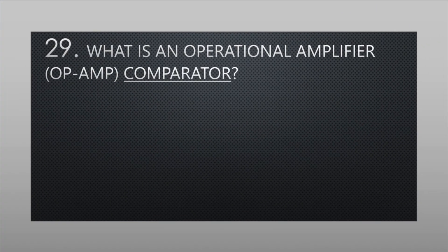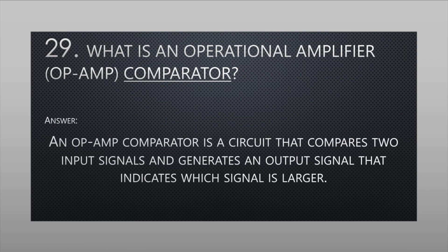What is an op-amp comparator? An op-amp comparator is a circuit that compares two input signals and generates an output signal that indicates which signal is larger.